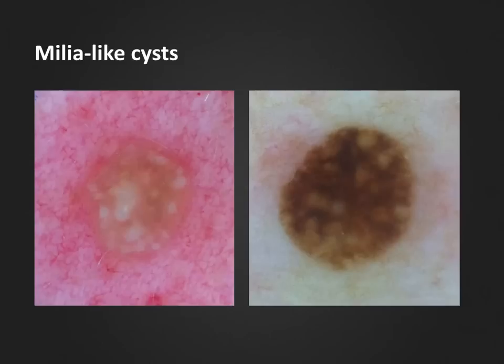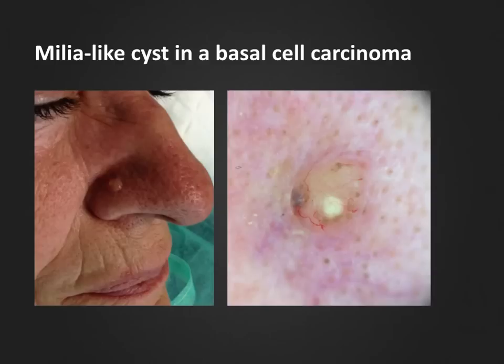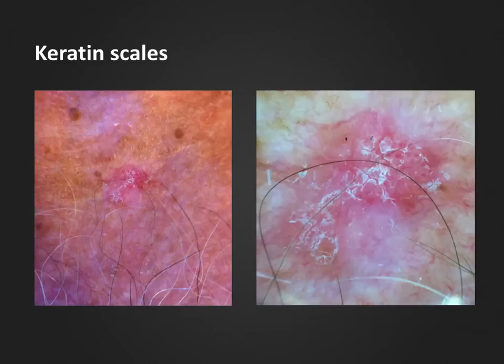One of the first white structures we learn about in dermoscopy are multiple small and round, whitish or yellowish structures that are regularly distributed throughout pigmented lesions that otherwise have a structureless general pattern. They are, of course, milia-like cysts — small intraepithelial keratin-filled cysts, which are typically found in seborrheic keratosis. However, when there are only a few or just a single milia-like cyst, one might have to look for other clues. In this case, there are multiple branched vessels, and at 9 o'clock we can also see a blue-gray ovoid nest, leading us to the diagnosis of pigmented basal cell carcinoma.